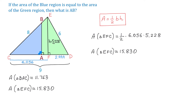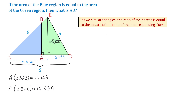Because EF and BA are both perpendicular to the bottom side, triangles EFC and BAC are similar. For similar triangles, we have the following theorem: the ratio of their areas is equal to the square of the ratio of their corresponding sides. So let's form the ratio of their areas: triangle BAC has area 11.763 and triangle EFC has area 15.830.